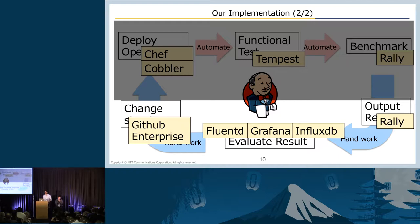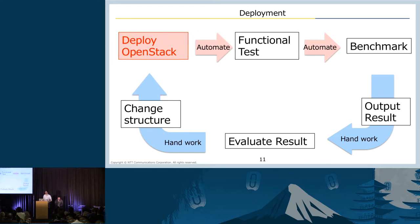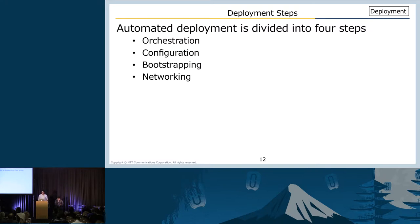We start to explain from deployment. We defined deployment as four steps: orchestration, configuration, bootstrapping, and networking. We can't automate these steps by using only one tool. Even in configuration tools alone there are many options: Chef, Puppet, Ansible, and more. So I would like to explain the definition of each step and the best practice for mixing several tools.